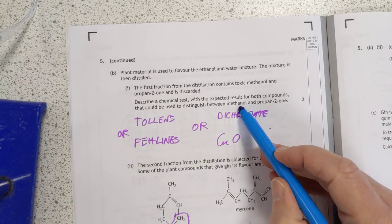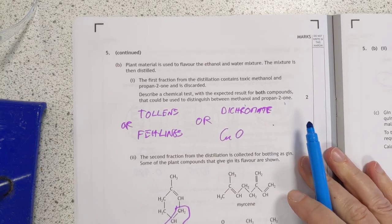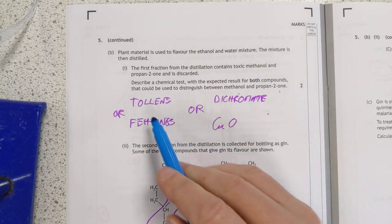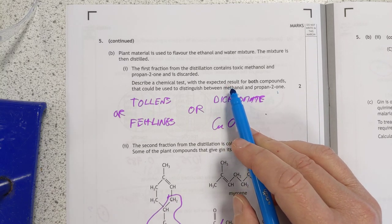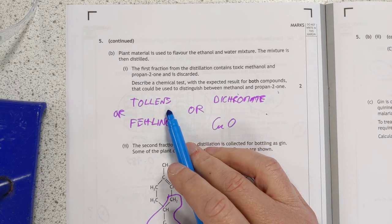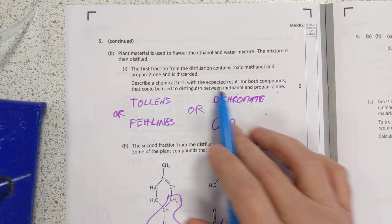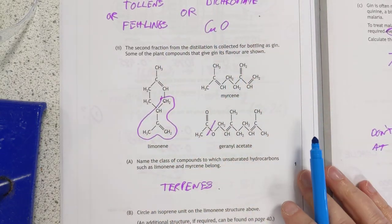Chemical test between an alcohol and a ketone. Alcohols can be oxidized, ketones cannot. So one of your classic oxidizing agents. Do you have to give the results? Yes. So make sure you include the correct color change, where it starts and where it ends for any one of these guys here. They should accept any of them.